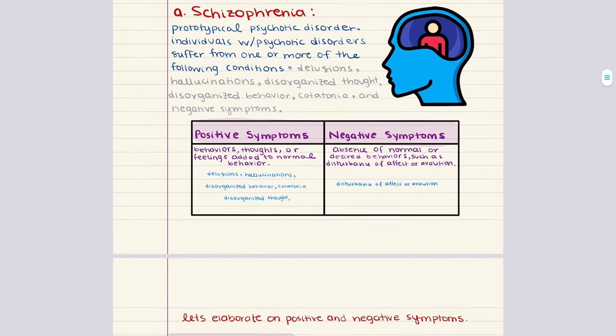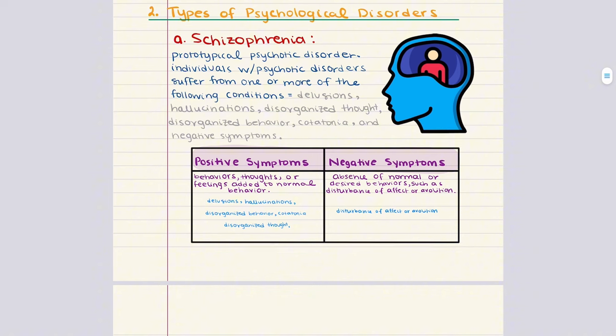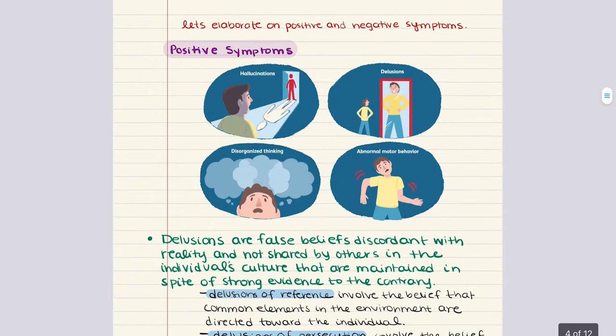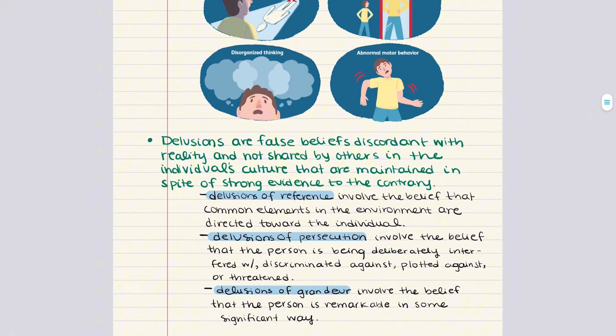With that, we move into the second objective: Types of Psychological Disorders. First, we'll cover schizophrenia and other psychotic disorders. Psychotic disorders, as classified in the DSM, manifest through a range of symptoms categorized into positive and negative types. Starting with positive symptoms — these are additional behaviors, thoughts, or feelings not typically present in normal behavior.